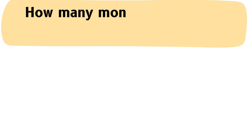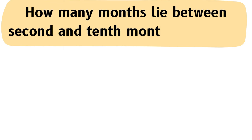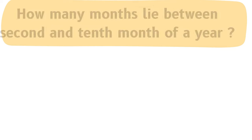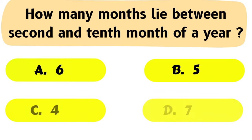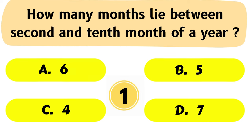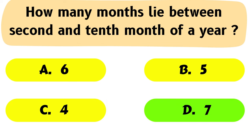Question No. 29: How many months lie between the 2nd and 10th month of a year? A. 6, B. 5, C. 4, D. 7. The correct answer is Option D: 7.